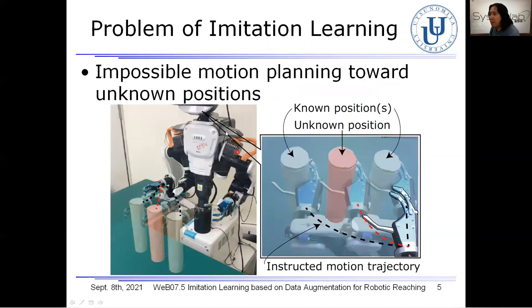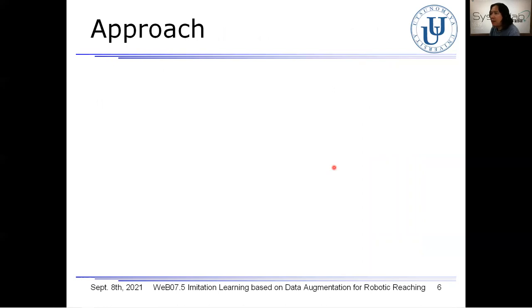Through imitation learning, the robot is able to reach the hand toward an object as instructed by the supervisor. This is called behavior cloning. However, once the target object is changed to an unknown position — which is the red position shown here from the robot's view — it is pretty much difficult for the robot to plan the reaching motion toward this red object. For this problem, reaching motions were instructed as many as possible for an object placed at many positions, but this approach increases the instruction cost.